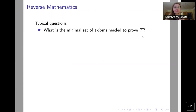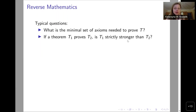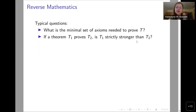Reverse mathematics is a program in mathematical logic whose basic question is: what is the minimal set of axioms needed to prove a given theorem? Another question that is also pretty basic and natural to ask is: if we know that in ordinary mathematics some theorem T1 proves theorem T2, we would like to know whether T1 is strictly stronger than T2 — whether the implication is reversible or not.